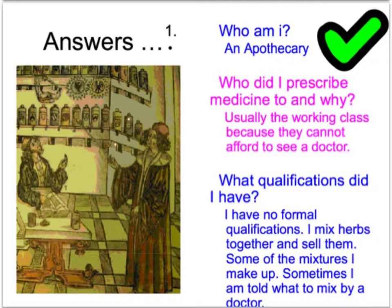Well, firstly you would have been an apothecary. Who did I prescribe medicine to and why? You were prescribed medicine to the working classes because they can't afford to see a doctor or a physician. What qualifications would you have had? None that were formal. You would have been somewhere between a scientist and a magician.